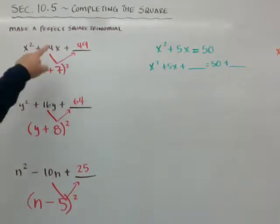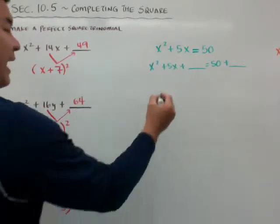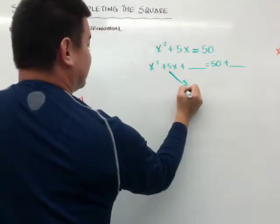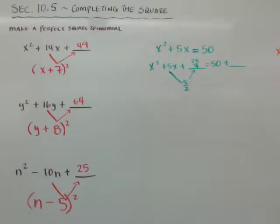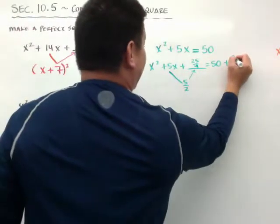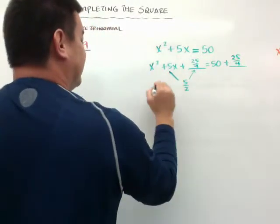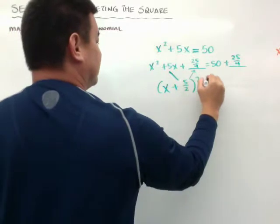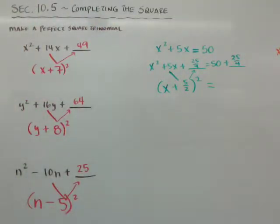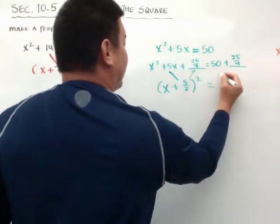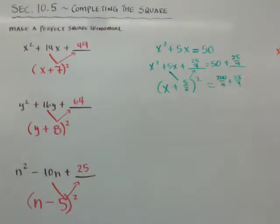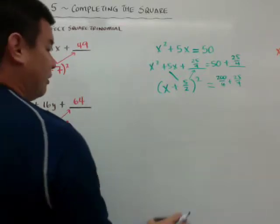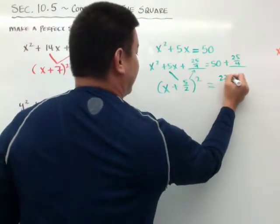I'm trying to create a perfect square trinomial on the left side. I half it: 5 over 2, and I square it to get 25 over 4. Whatever I add on the left, I add 25 over 4 on the right as well. So it becomes x plus 5 over 2 quantity squared. On the right, 50 is 200 over 4, plus 25 over 4 gives us a common denominator of 225 over 4.